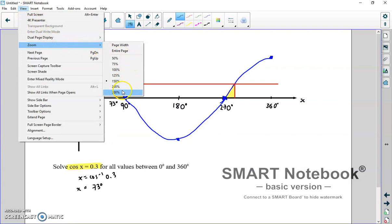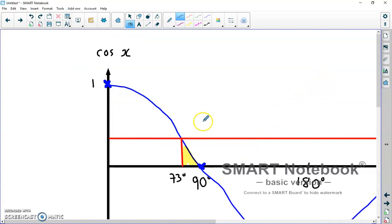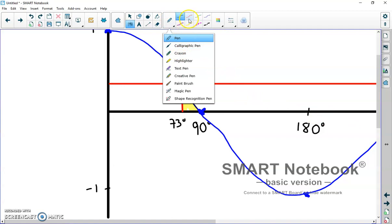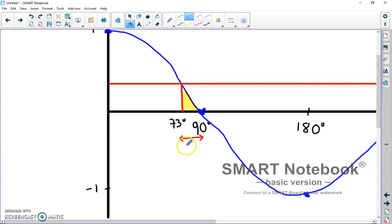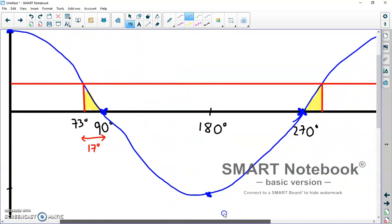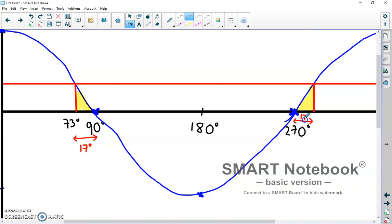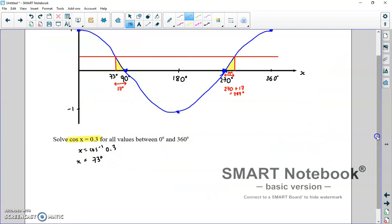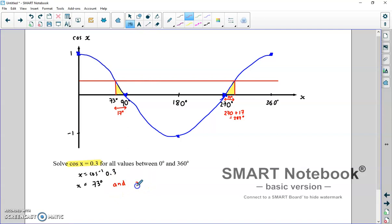If I zoom in on that, really what I'm interested in is the width, then, of that little shape. So, from 73 to 90 is a gap of 17 degrees. So, if I now come across here to my second solution, this gap is also 17 degrees. It's to the right of 270, so 270 plus 17 is 287 degrees. If I zoom back out, then, I can put down here at the bottom that x is 73 degrees, and, but this is the symmetry of the graph, x equals 287 degrees, and it was all to do with that little 17 degree gap there that I then copied over here and had a 17 degree gap.